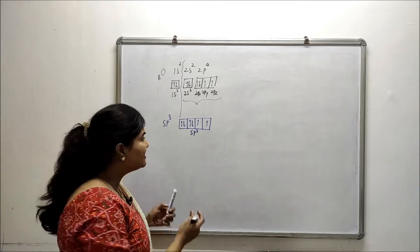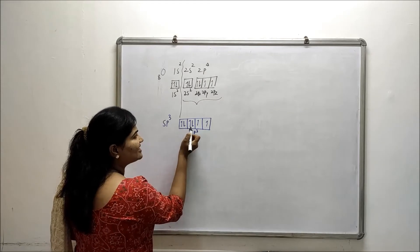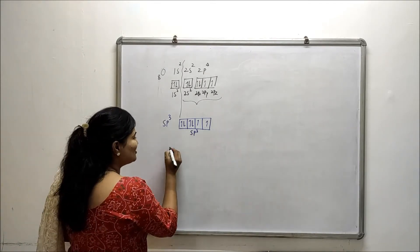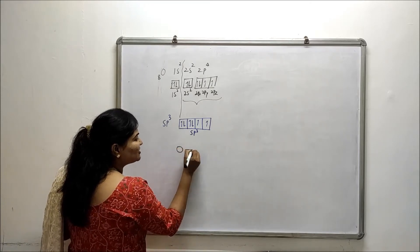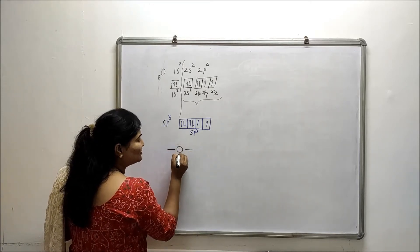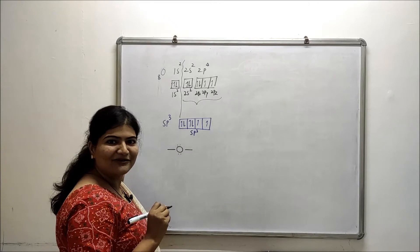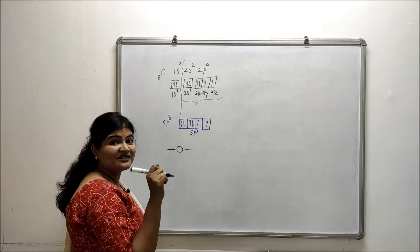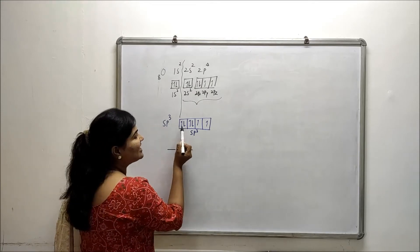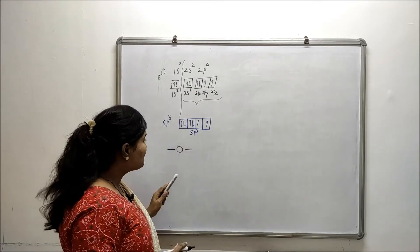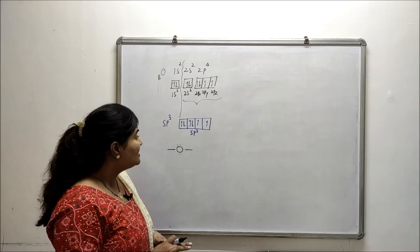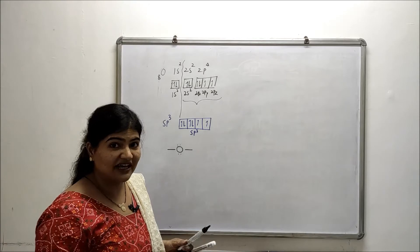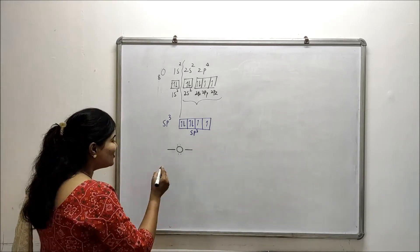In these sp3 hybrid orbitals, two of the orbitals are already completely filled — we call these lone pairs. That is why we always show oxygen with two bonds and two lone pairs. When oxygen is in the sp3 hybridized state, it has two lone pairs with it.